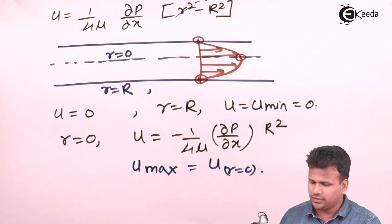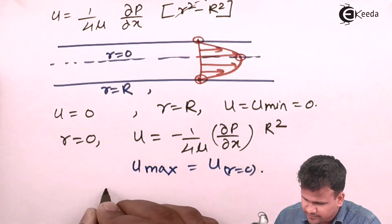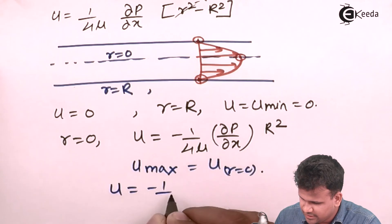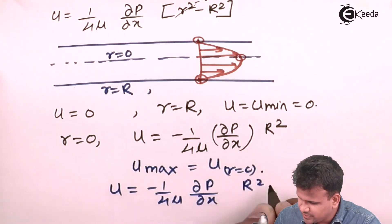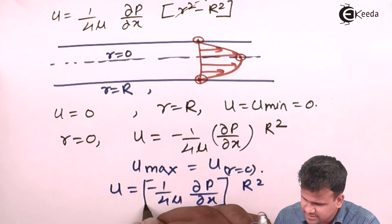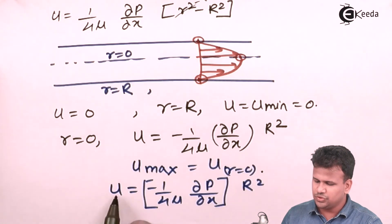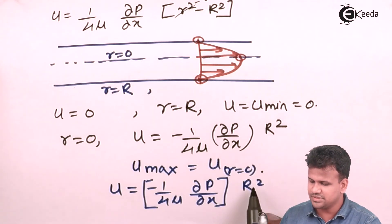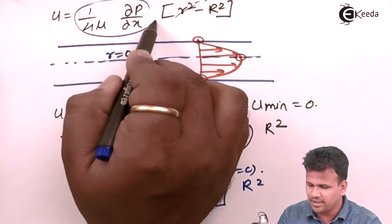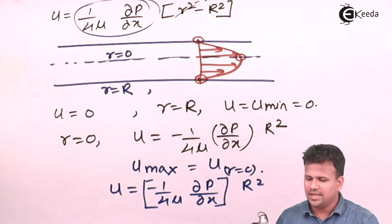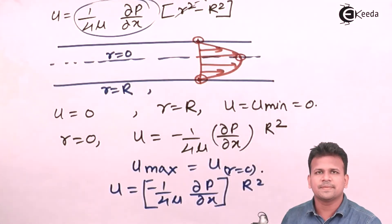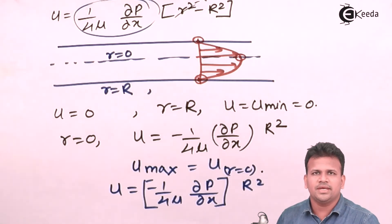We can write u equals minus (1/(4mu)) times (∂p/∂x) times r². The entire prefactor remains constant, so u is purely a function of r squared — hence we have a parabolic curve. I hope you have understood what is velocity distribution in laminar flow in a circular pipe. Thank you.